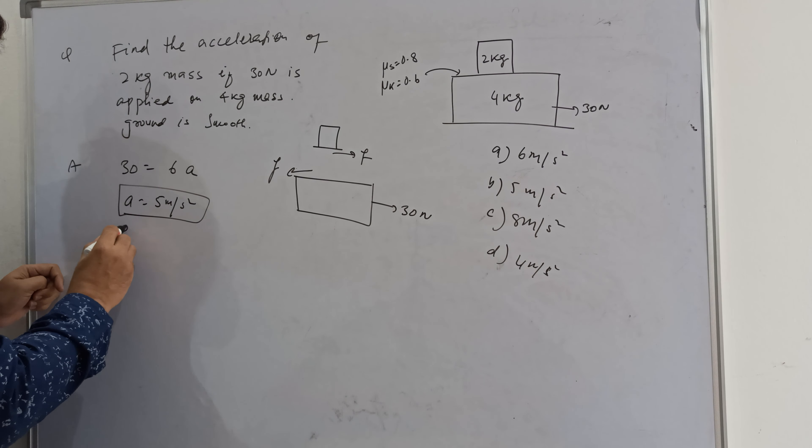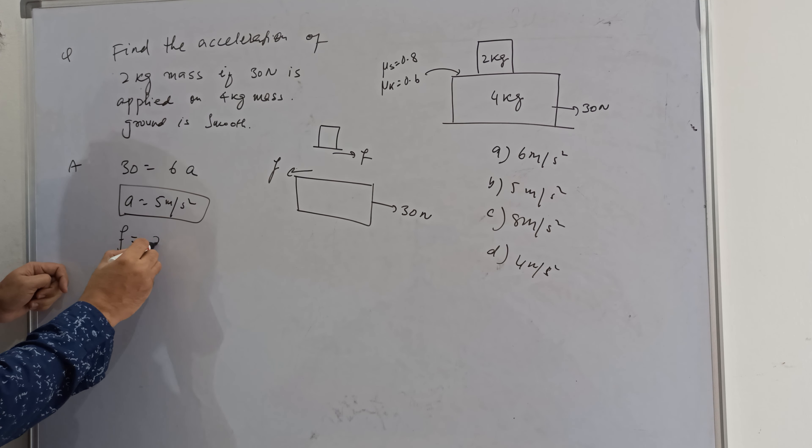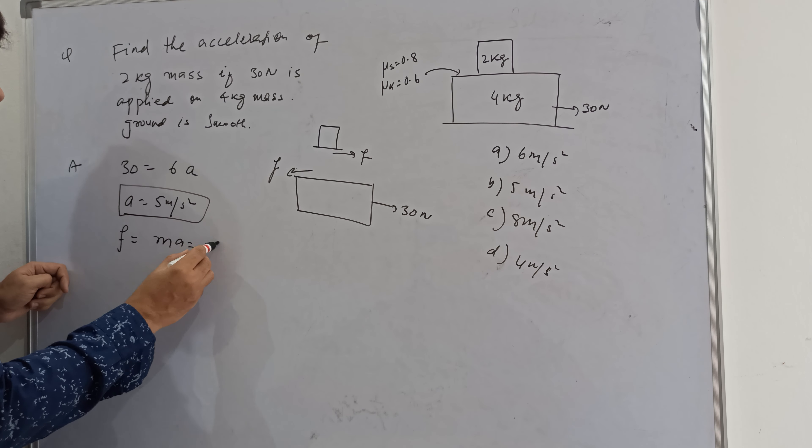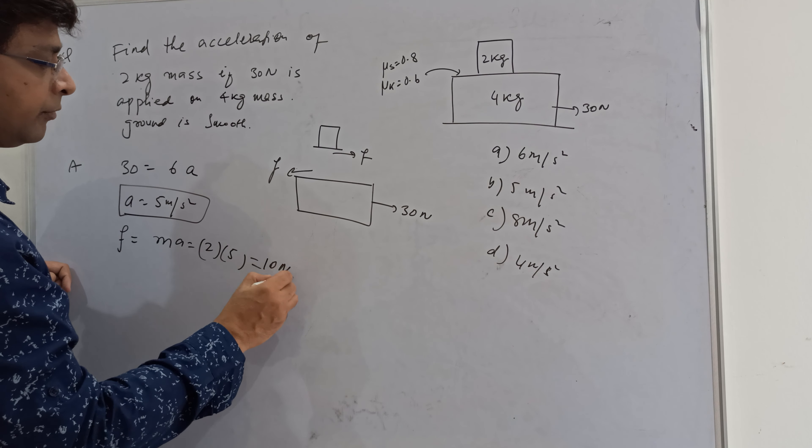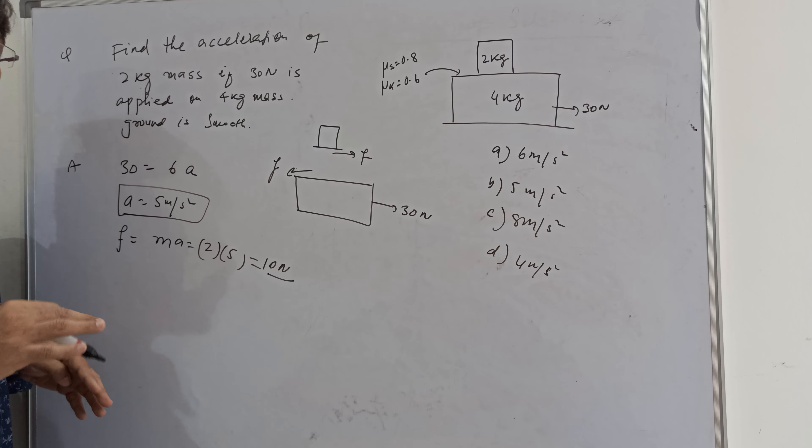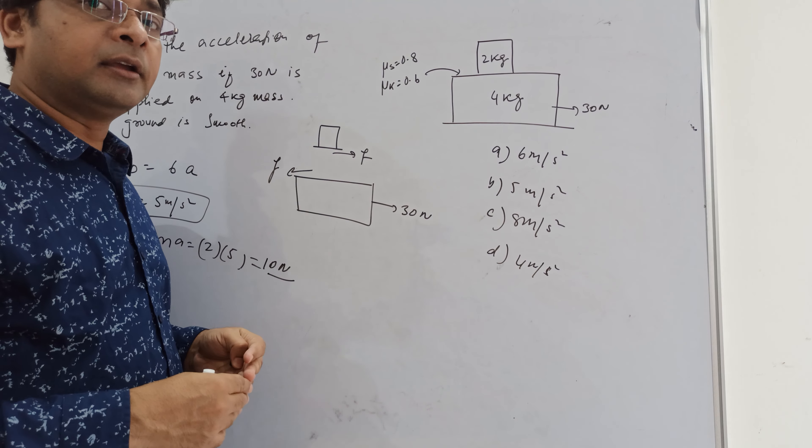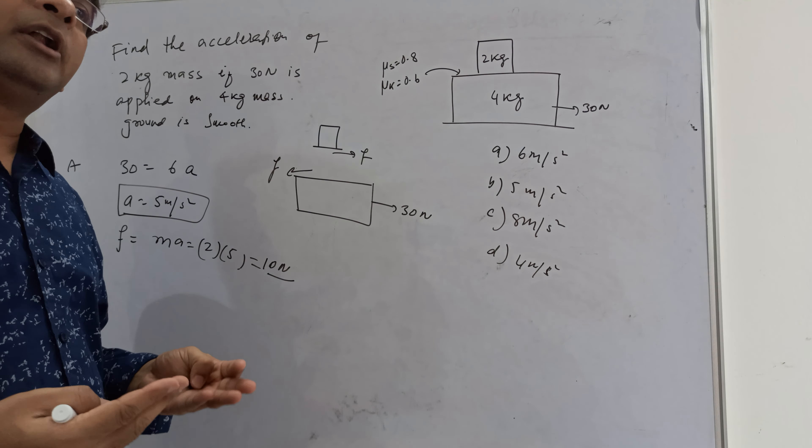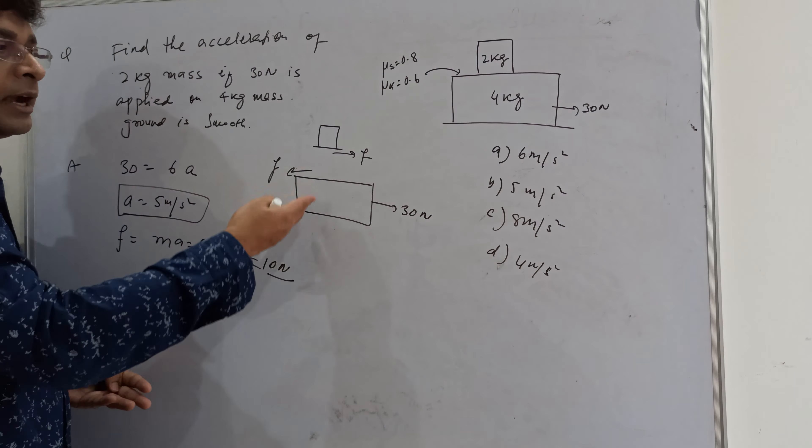If the block has to accelerate, then friction is responsible for this acceleration. So I can write mass into acceleration, mass is 2 kg, acceleration is 5 meter per second square, so 10 newton friction should be acting. Now I have to verify that 10 newton friction is possible.